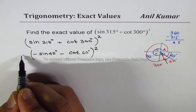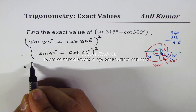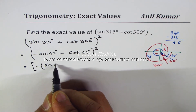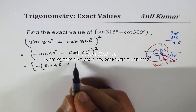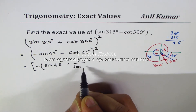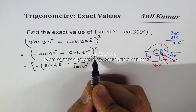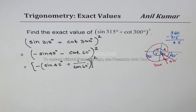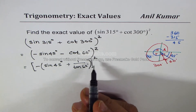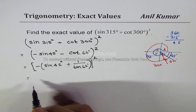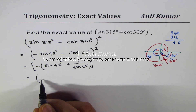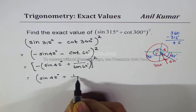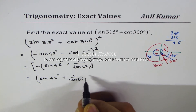We have acute angles. We can take minus common, so we get minus of sine 45 degrees plus 1 over tan 60 degrees, whole squared. When you square, negative becomes positive. So what we get is sine 45 degrees plus 1 over tan 60 degrees, whole squared.